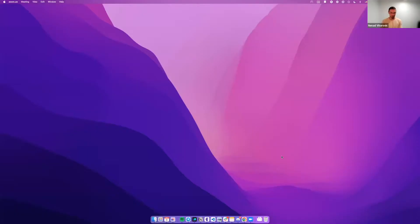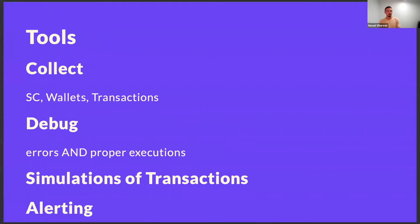I'll continue where I left off last time. So just a brief overview of what we covered: the smart contract registry, where you can add the smart contracts you're interested in; the transactions happening on chain involving those contracts; the debugger, which allows you to inspect how a transaction went, the state changes, events emitted, and so on. And then we took it further with simulations — taking any transaction happening on chain and simulating its execution while changing parameters or storage slot values.